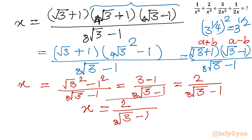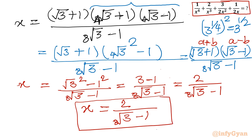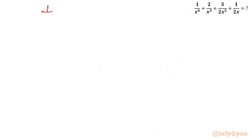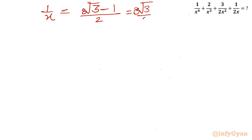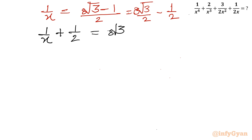So x = 2/(8th root 3 − 1). Now we have to evaluate the given expression. Let us find the reciprocal: 1 over x equals (8th root 3 − 1) over 2, which we can write as (8th root 3)/2 − 1/2. Adding 1/2 to both sides: 1/x + 1/2 = (8th root 3)/2.